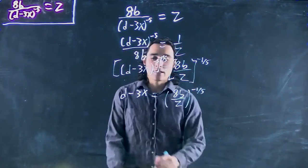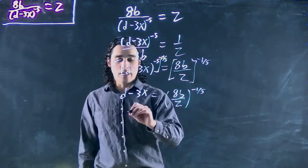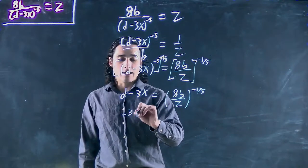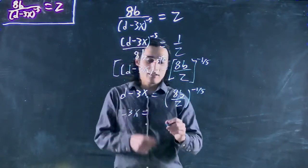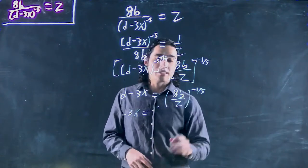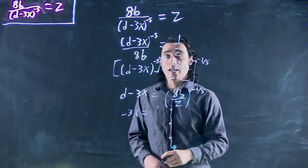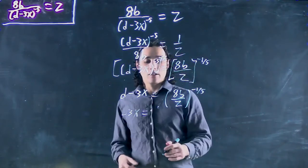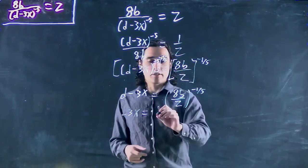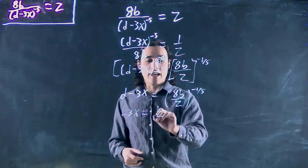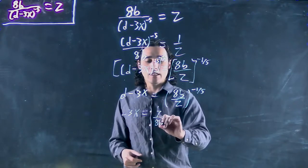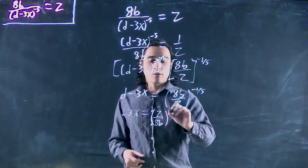We'll do that in the next step because we have minus 3x equals this minus d. But again, if I want to get rid of this negative exponent, I can just flip. I could have technically done that up there to solve this but didn't bother. So this can be rewritten as z over 8b to the 1/5.